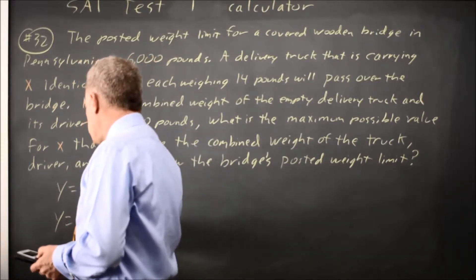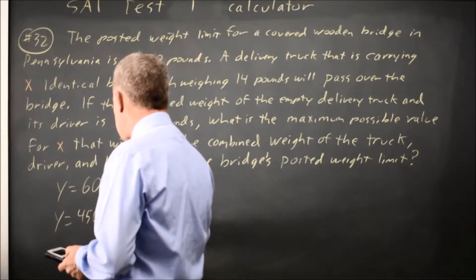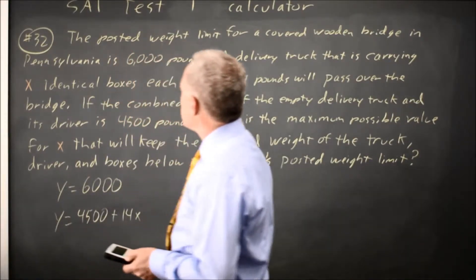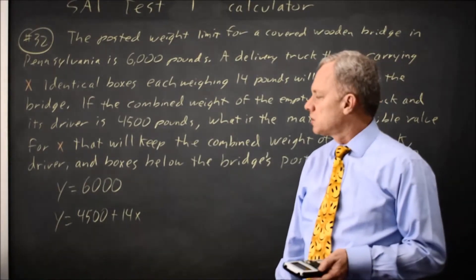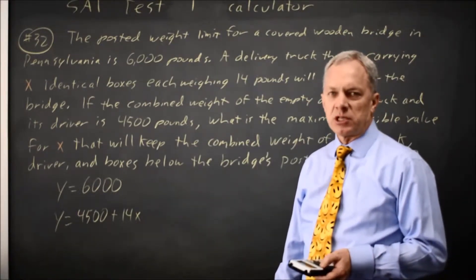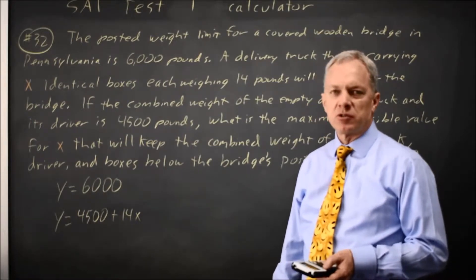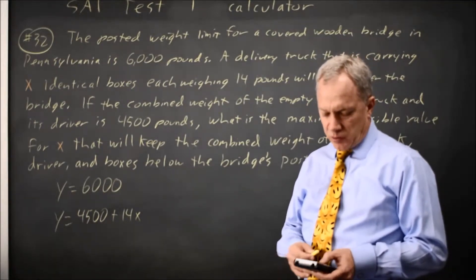and Y equals 4,500, the weight of the truck, plus 14X, where X is the number of identical boxes, and each box weighs 14 pounds, so 14X is the weight of the boxes, and 4,500 is the weight of the driver plus the truck.